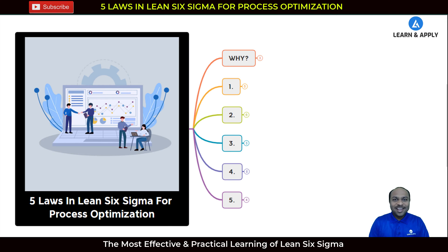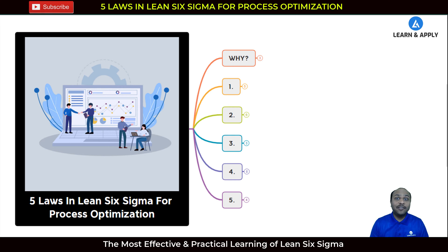Hello friends, welcome back. In this video we are going to understand one important and unique topic that you might not have heard or learned anywhere. This topic is very important for every working professional, whether you are a CEO, middle management, or belonging to any other managerial position. It is also very important if you are a working professional interested in acquiring Lean Six Sigma training and certification. So let's dive into it — what are the five laws in Lean Six Sigma for process optimization?